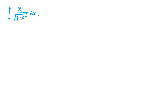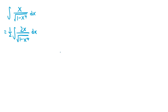We don't have a 2x in the numerator, but we have an x term in the numerator, so we can bring out a constant of 1 half and rewrite the integral as 1 half times the integral of 2x over the square root of 1 minus x to the fourth dx. So now we're ready to do the substitution. We'll let u equal x squared, which means du is equal to 2x dx.